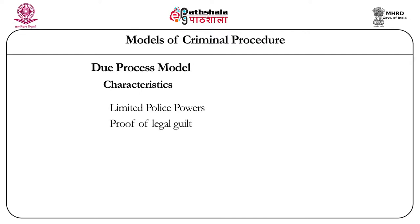The second point under reliability is proof of legal guilt. The Due Process Model does not believe in factual probability of guilt — it does not deem a person guilty even if informally established facts show in all probability that he committed the alleged crime. It starts on the premise of presumption of innocence and mandates that the guilt of the accused must be proved having regard to all procedural safeguards, including jurisdiction of the tribunal, double jeopardy, presumption of innocence, etc. Thus, a crime committed in front of a large crowd may go unpunished if witnesses refuse to depose against the accused.